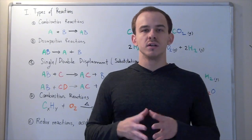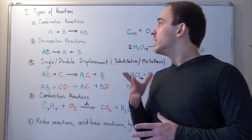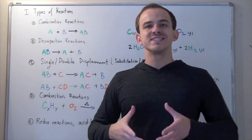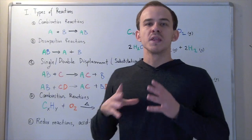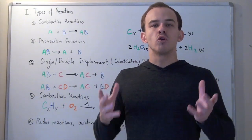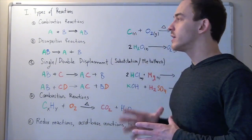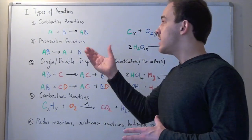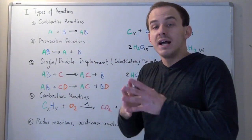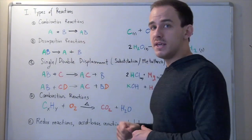In this lecture, we're going to look at some very common chemical reactions. Let's begin with a combination reaction. A combination reaction is exactly what the name implies: two or more reactants combine by forming bonds to produce a new compound with a new molecular formula. In our hypothetical example, reactants A and B combine to produce a new compound, namely AB.